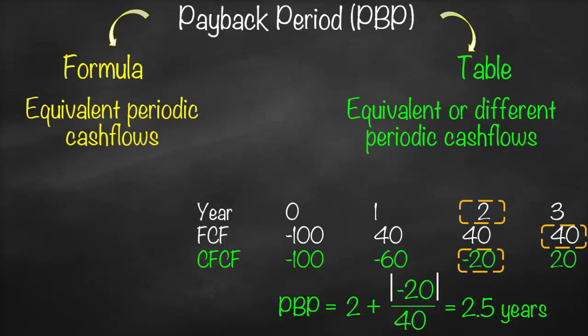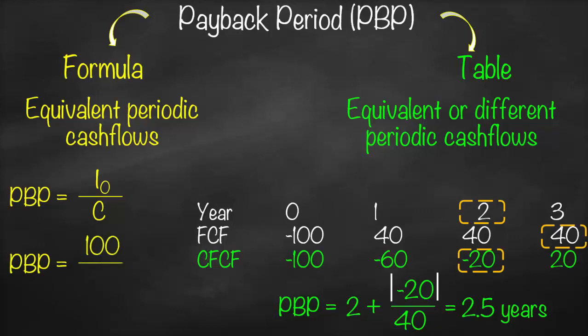Now, regarding the formula — we said that with the formula we must have equivalent periodic cash flow. Looking at this example, from year one through three we have the same cash flow of 40 million every year. Therefore we can use the formula. The payback period formula is: initial investment (without the negative sign) divided by the equivalent periodic cash flow C. So our initial investment is 100 million divided by the periodic cash flow, which is the same every year at 40.